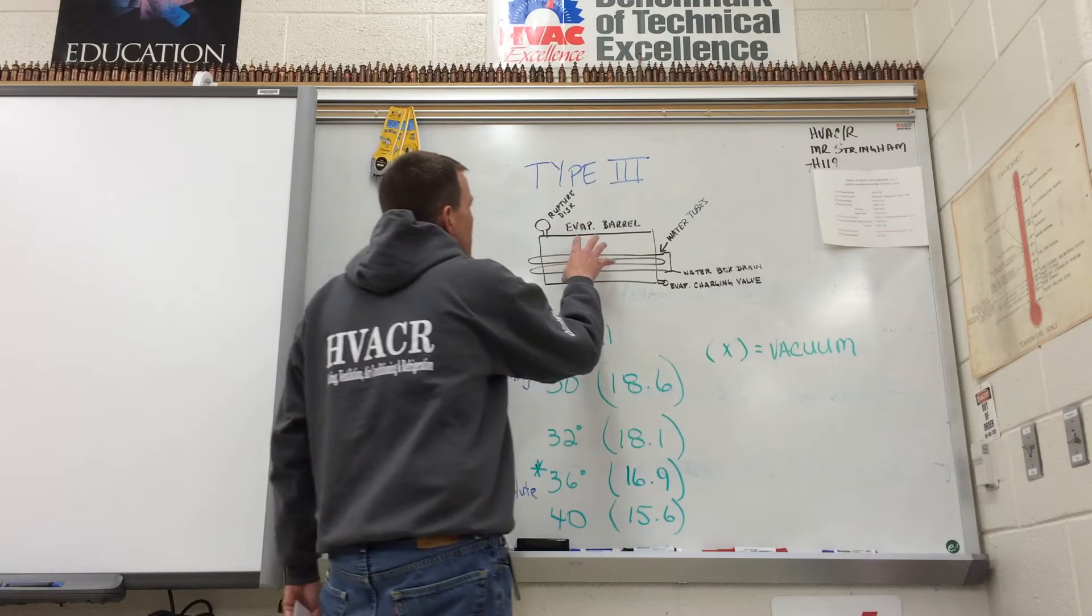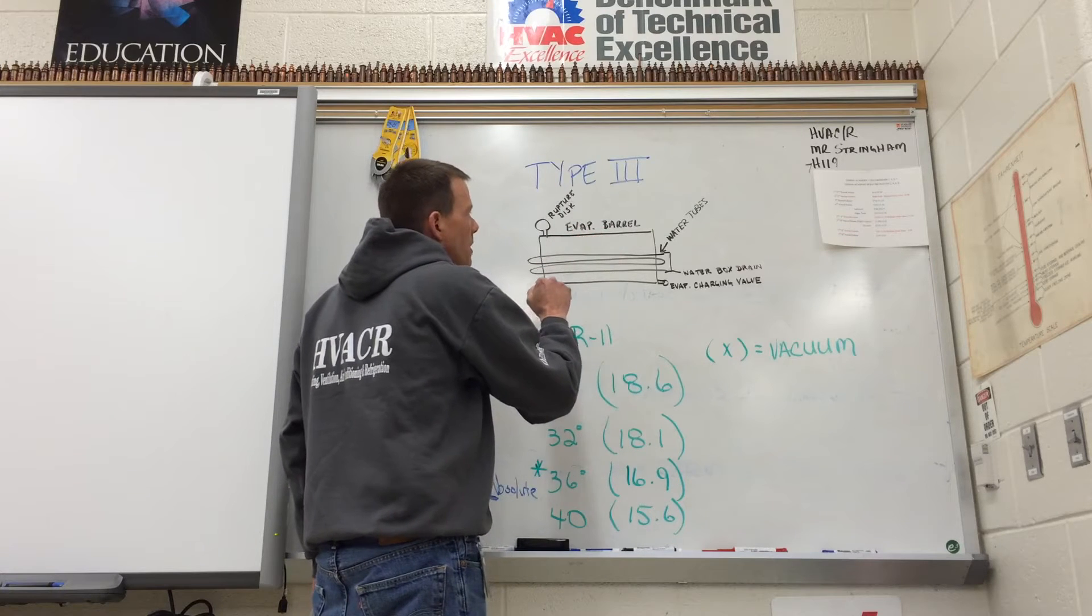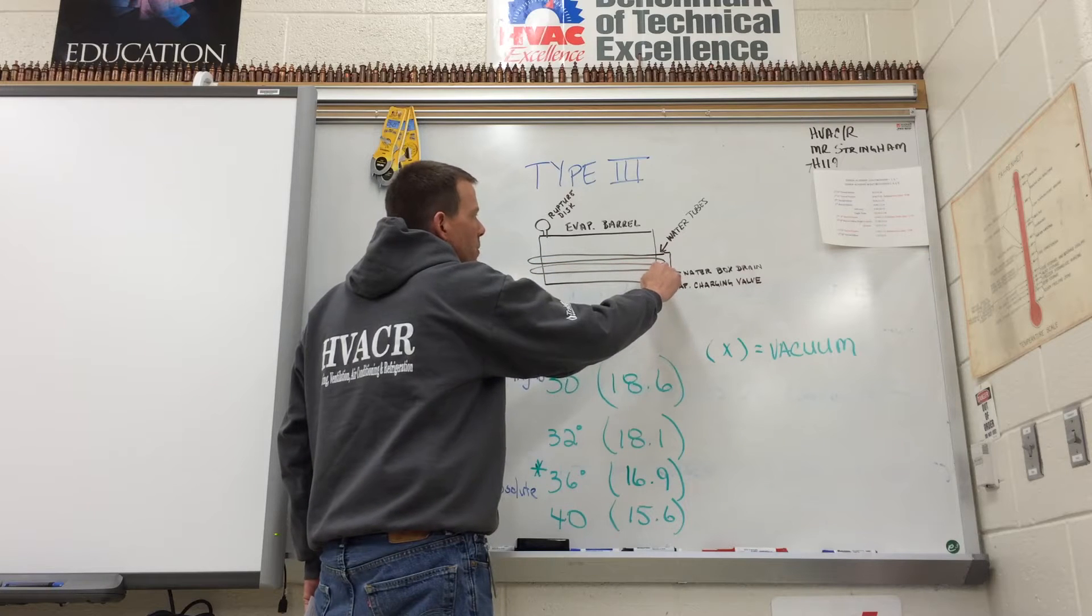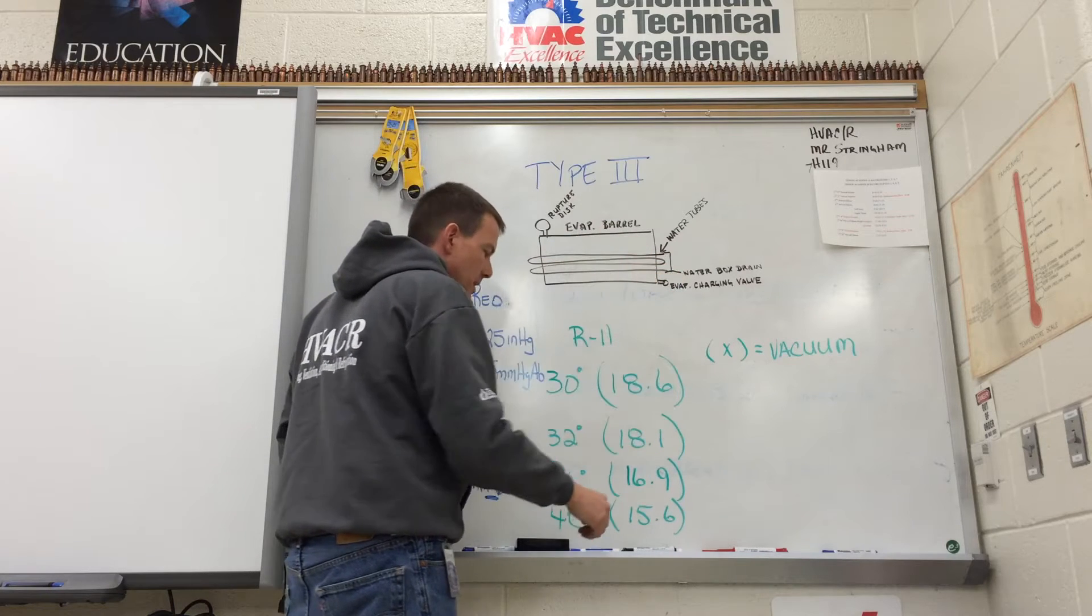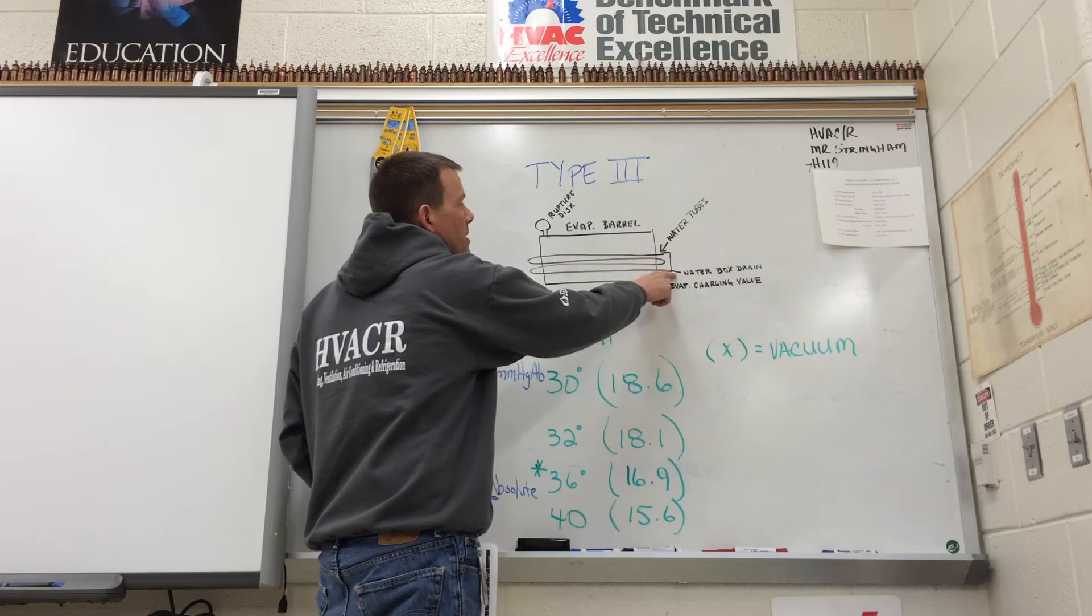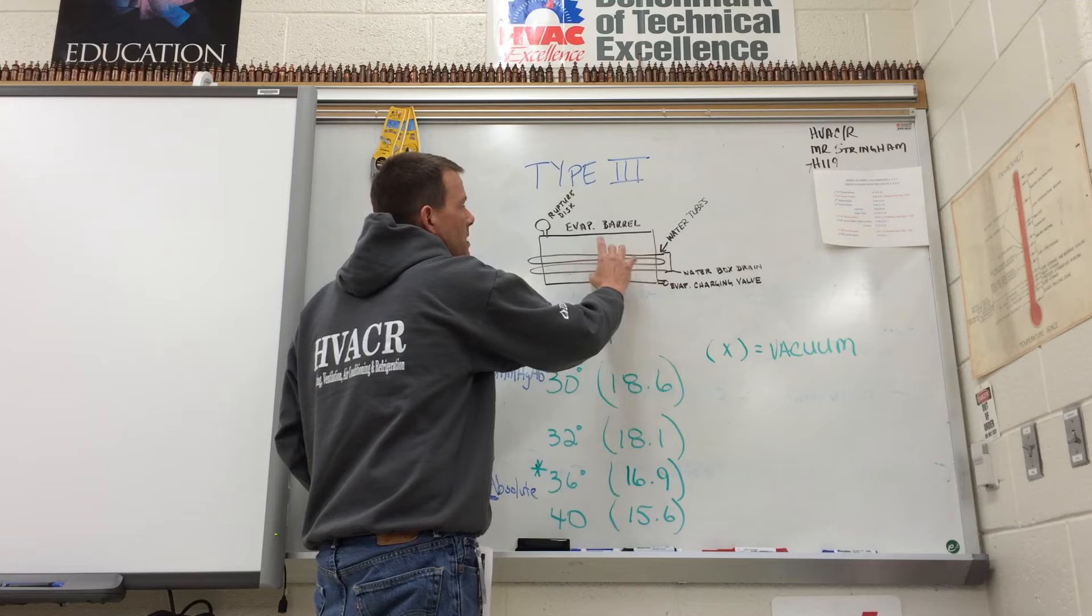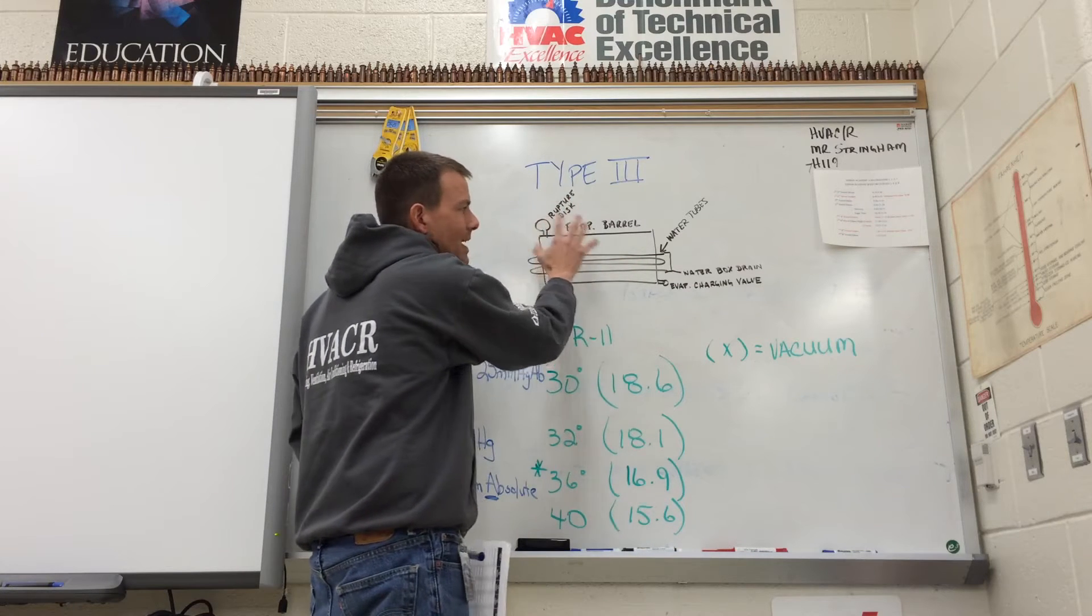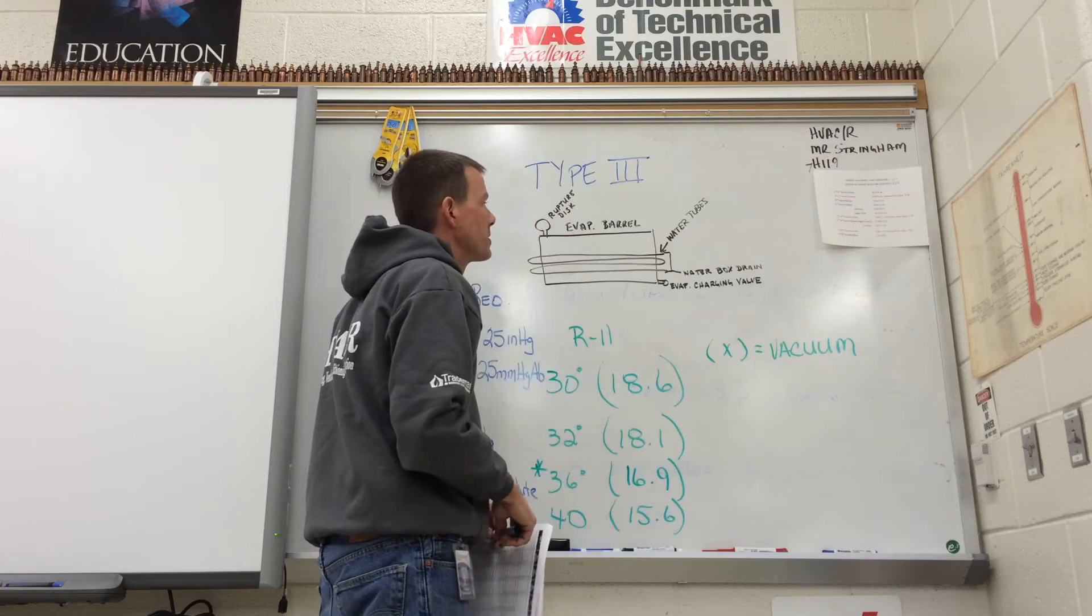First off, with the Type 3 appliance, I'm looking at the evaporator barrel and we have the water pipes that run through back and forth so that the chilled water can be circulated throughout the building as their cooling medium. The water box drain on the side would probably be the best place to shove the probe in to see if any of these tubes are leaking, and then the rupture disc is connected to the evaporator. This is not exact, this is just to show some of the things with the evaporator.